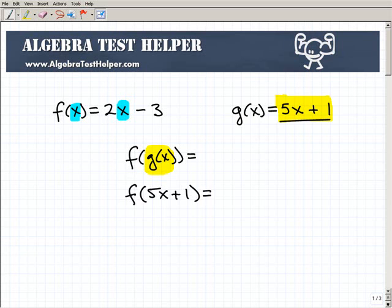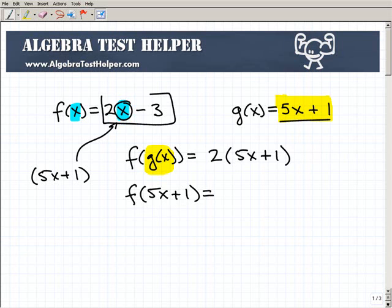f of 5x plus 1, which is in fact the g of x function. So that means right here, where this x is, you're going to plug in 5x plus 1. So let's go ahead and do that. f of g of x is the same thing as f of 5x plus 1. So that's going to be 2 times 5x plus 1. Now we can't forget this 3. All I did right here is 2 times 5x plus 1 minus 3. So take a good look at that here for a second.